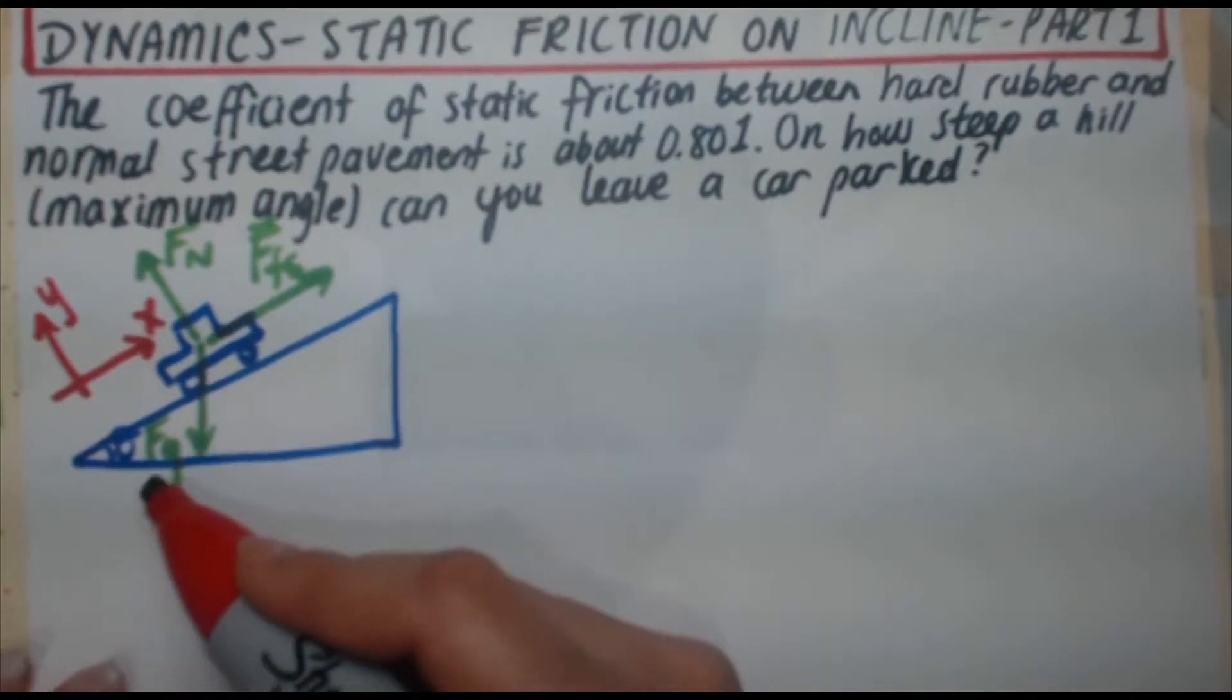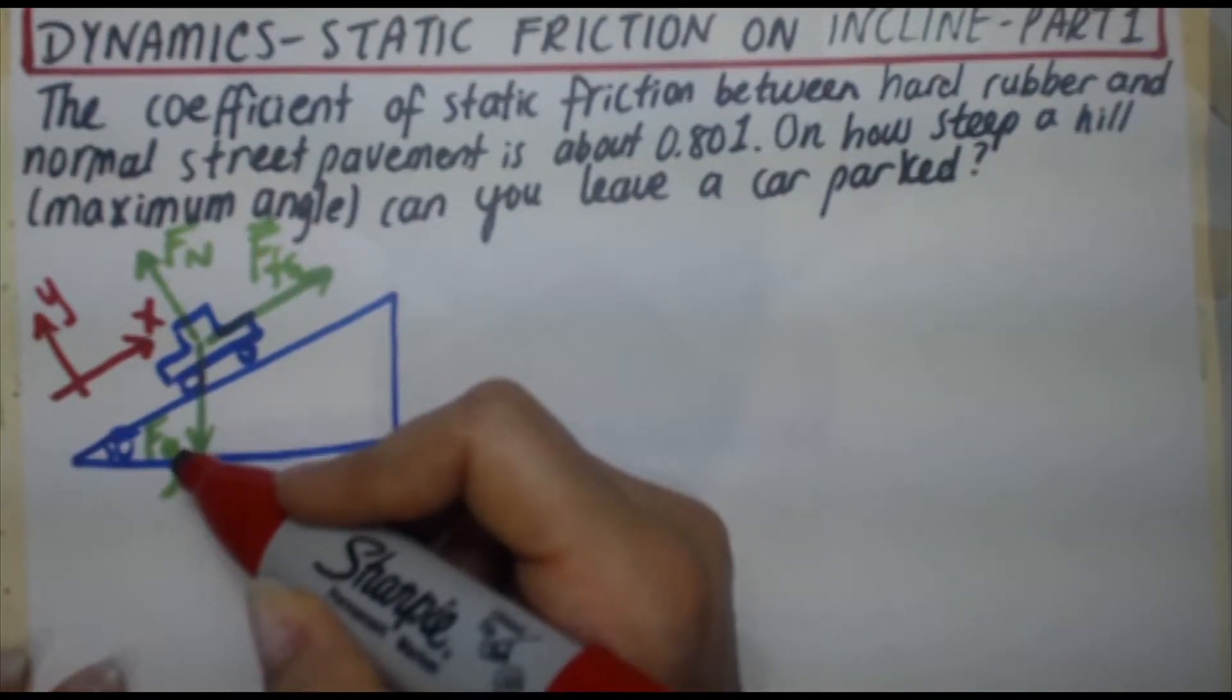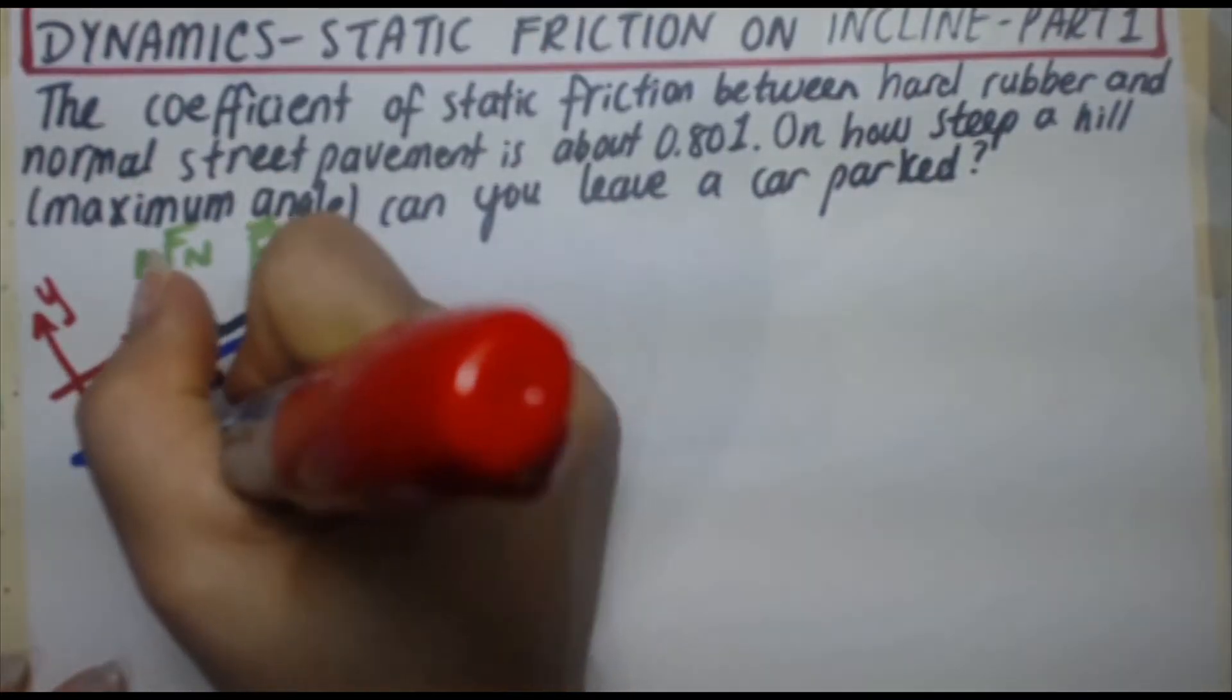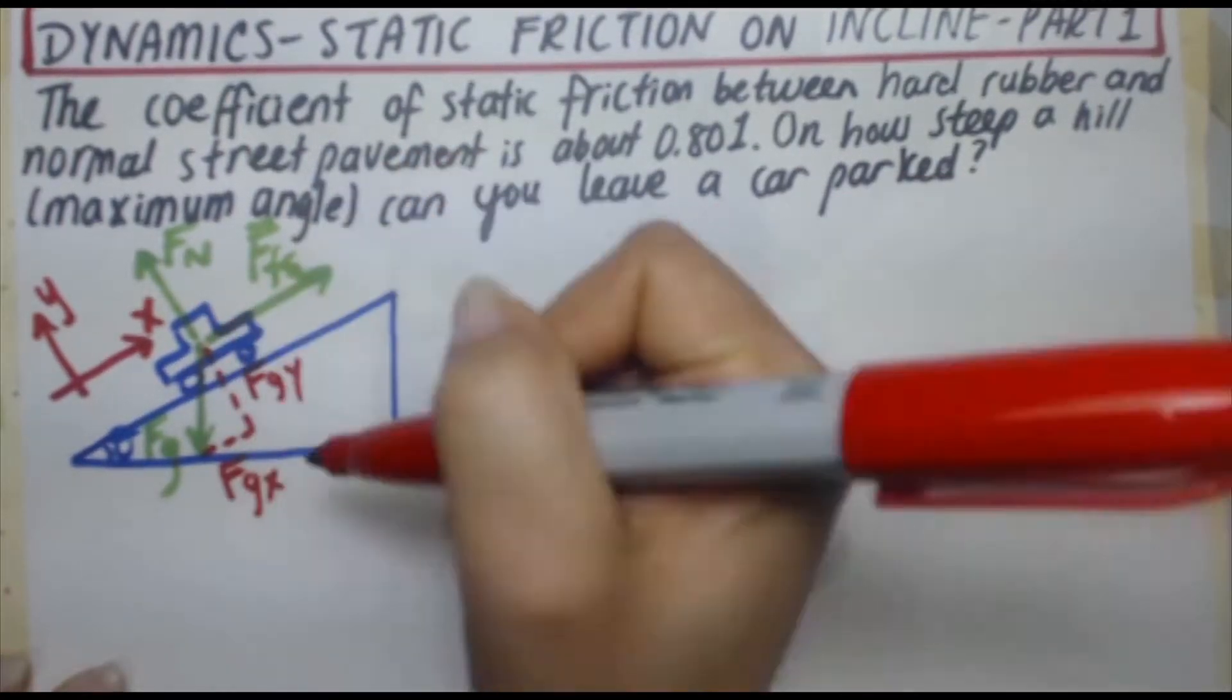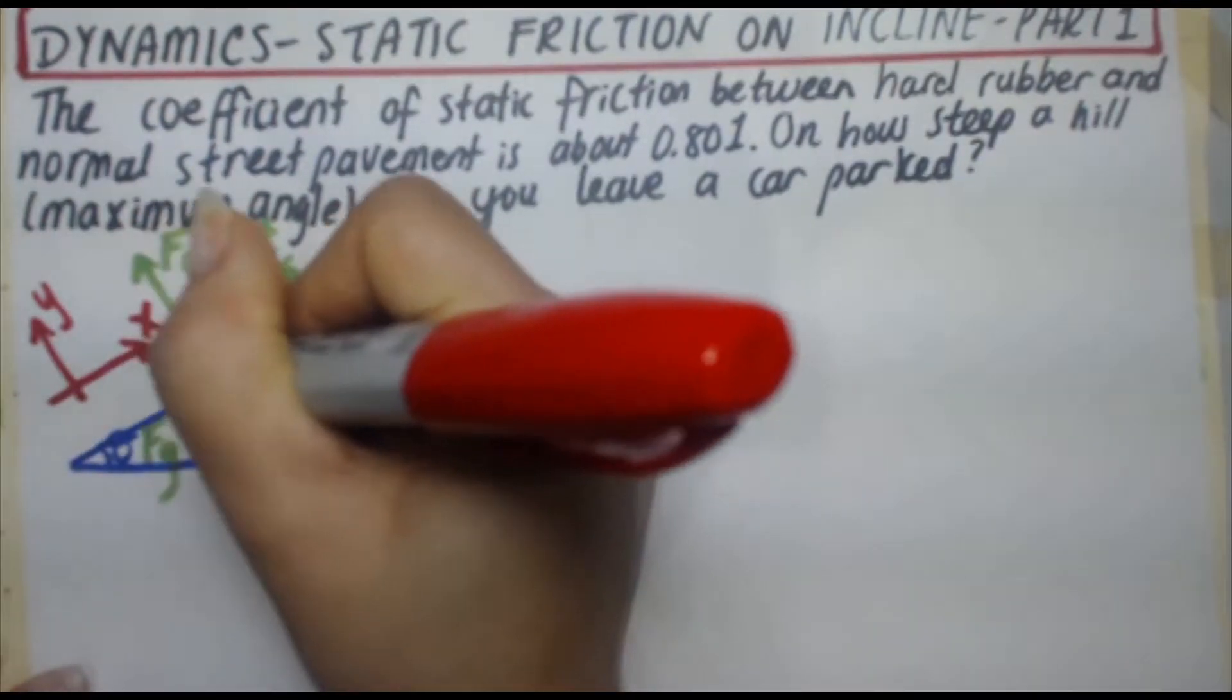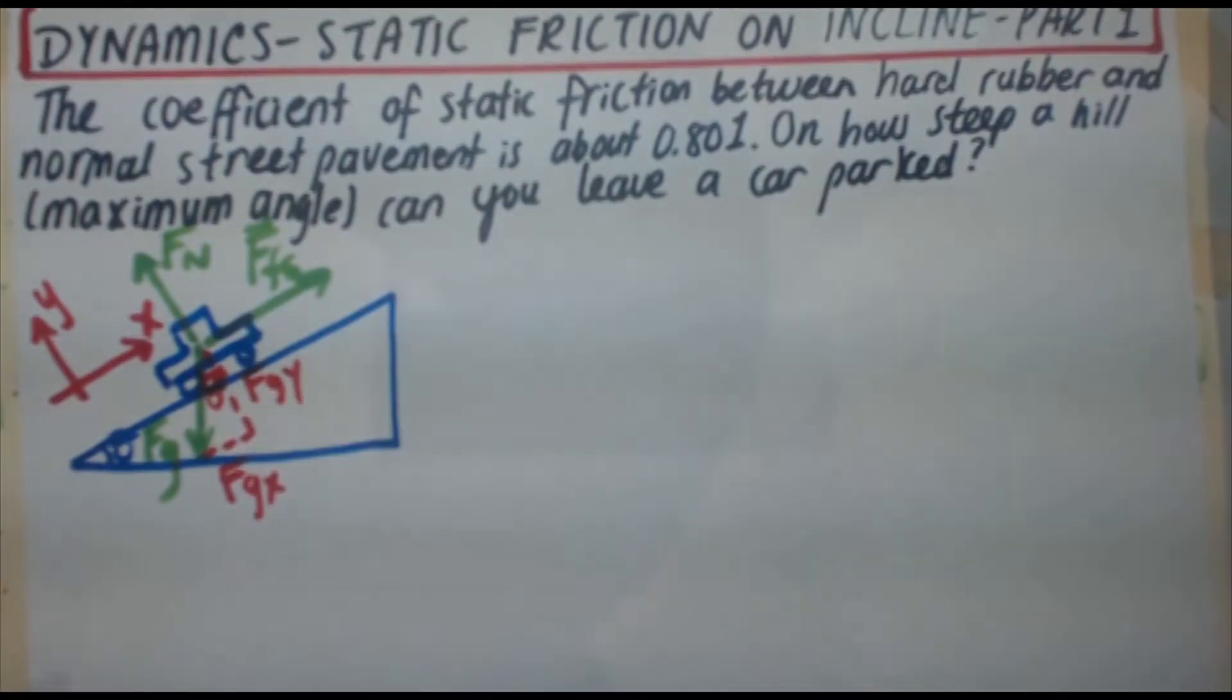So now that FFS is in the positive x, Fn is in the positive y, we have to break Fg up into components so that it has an x and y component as well. So remember, when you're given a force that you then need to break up into x and y components, the actual force is considered the hypotenuse of the right angle triangle. So what I'm going to do is I'm going to drop down a line here from Fg and then I'm going to connect it. So I've made my right angle triangle there. The base of this right angle triangle is going to be my Fgx and the vertical part is going to be Fgy.